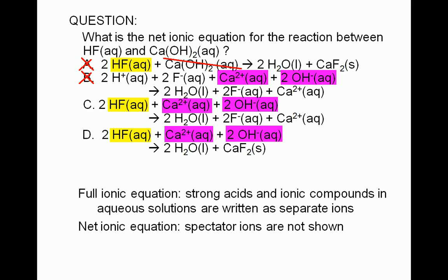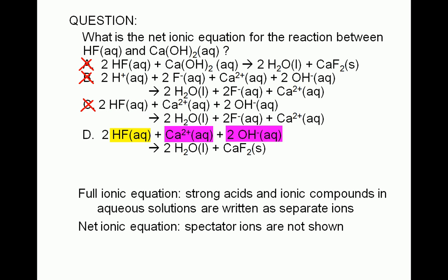Choice C would be the full ionic equation if calcium fluoride were soluble — that is, if the calcium and fluoride ions were to remain dissolved. However, from solubility rules we know that calcium fluoride is insoluble in water and will precipitate out. Furthermore, choice C includes a spectator ion: calcium ion appears on both the left and right sides. So choice C is incorrect, and choice D must be the correct answer.